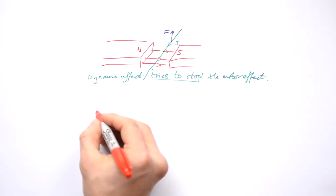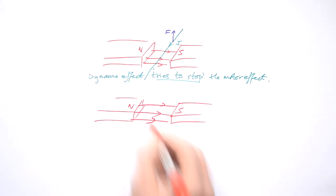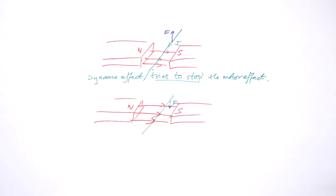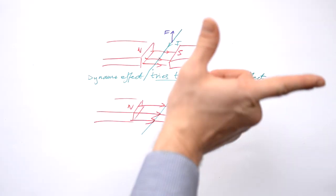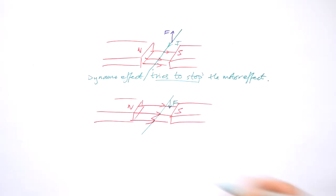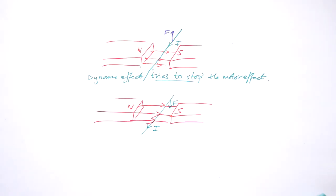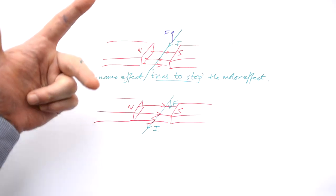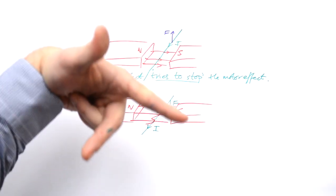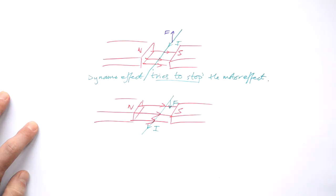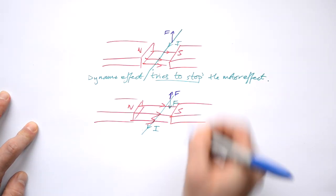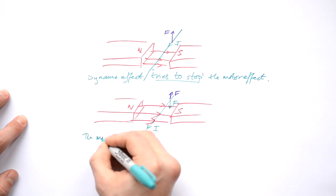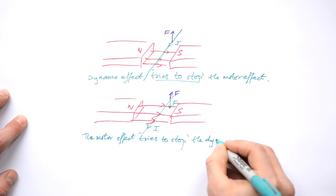It also works the other way around. Let's say we start with a wire and force it downwards. Using Fleming's right hand rule — field going that way, force going downwards — our current is going to be going in this direction. But now we have a current going through a piece of wire, so we bring in Fleming's left hand rule. Field going that way, current going that way — we're actually producing a force going in the opposite direction. The motor effect tries to stop the dynamo effect.